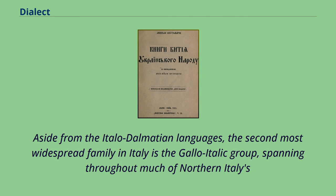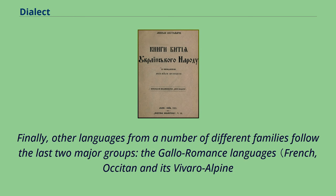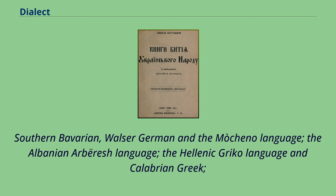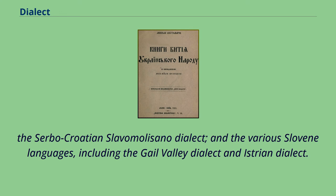Aside from the Italo-Dalmatian languages, the second most widespread family in Italy is the Gallo-Italic group, spanning throughout much of northern Italy. Other language families present include the Gallo-Romance languages — French, Occitan and its Bavaro-Alpine dialect, and Franco-Provençal — as well as the Rhaeto-Romance languages, Ibero-Romance languages, and Germanic varieties such as Cimbrian, Southern Bavarian, Walser German, and the Mòcheno language. Also present are Albanian-Arbëreshë, Hellenic-Griko, Calabrian Greek, the Serbo-Croatian Slavomolisano dialect, and various Slovene varieties including the Resia Valley dialect and Istrian dialect.